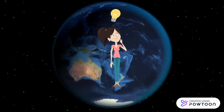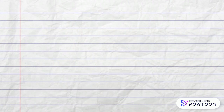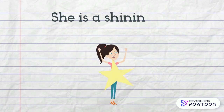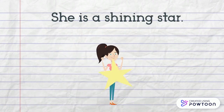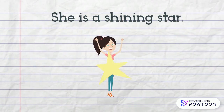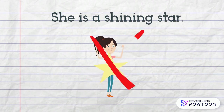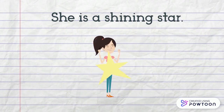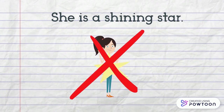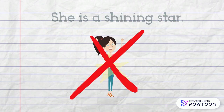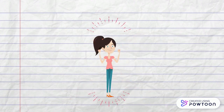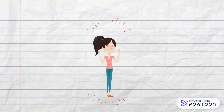Here's an example. She is a shining star. We don't actually mean she is a star, but we are saying that she is so amazing and fantastic that she shines bright like a star. This is an example of a metaphor.